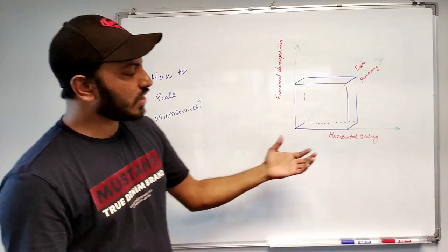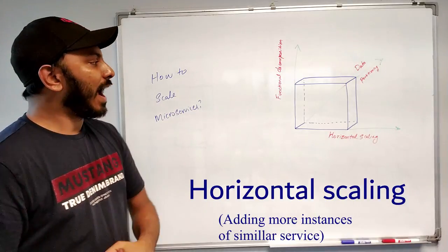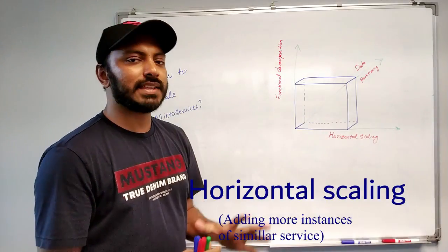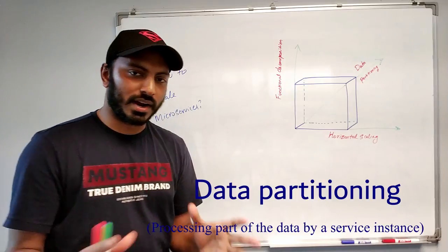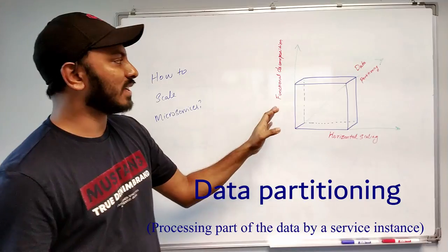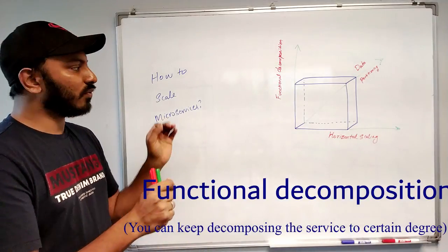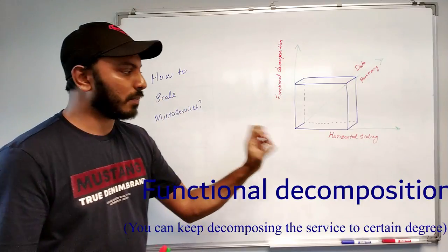So the x direction basically represents horizontal scaling that everyone knows, and the z direction is basically you can scale using data partitioning technique, and the y direction or y axis is basically functional decomposition. That's what we did when we convert monolithic to microservices.